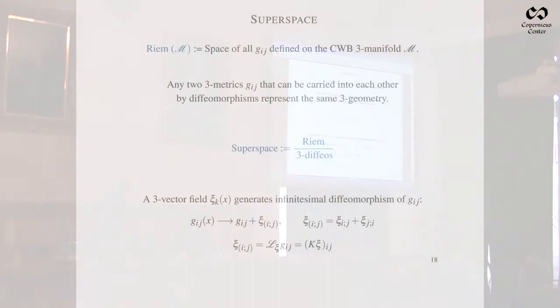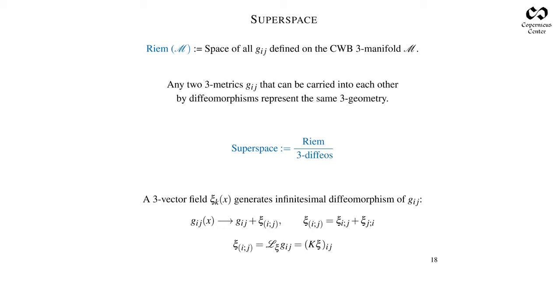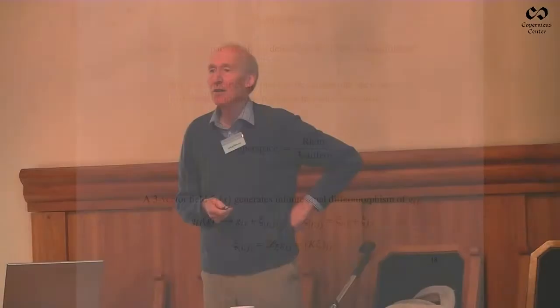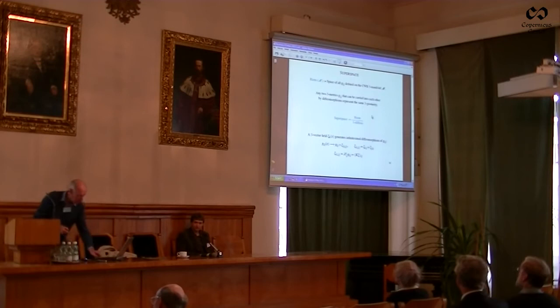Superspace is the concept that John Wheeler introduced. Riem is the space of all Riemannian 3-metrics defined on a 3-manifold that is closed without boundary. Any two 3-metrics that can be carried into each other by a diffeomorphism represent the same 3-geometry—that is superspace. That's the analogue of what I call the relative configuration space, before I start thinking about dilatations and changing the scale.